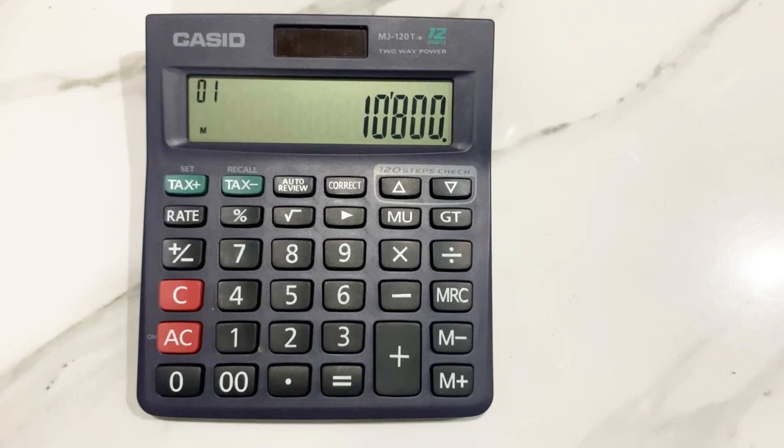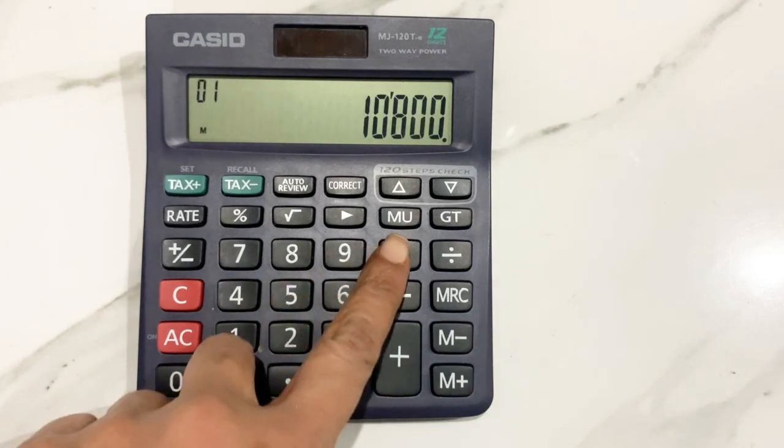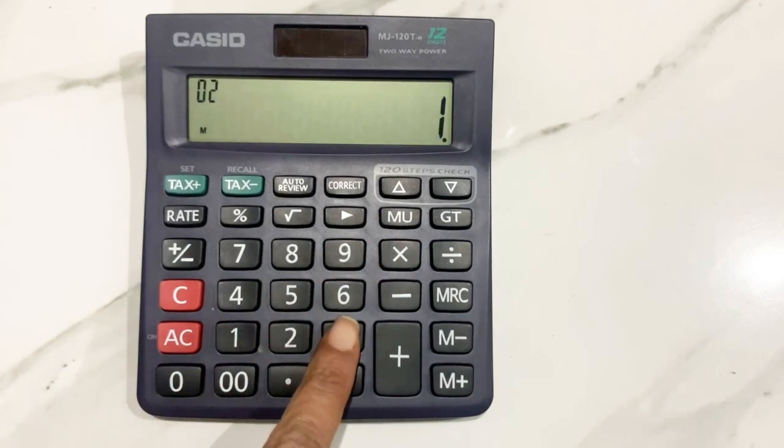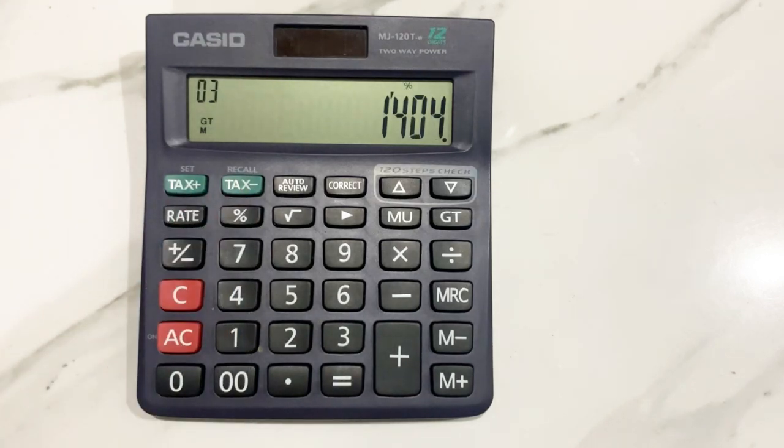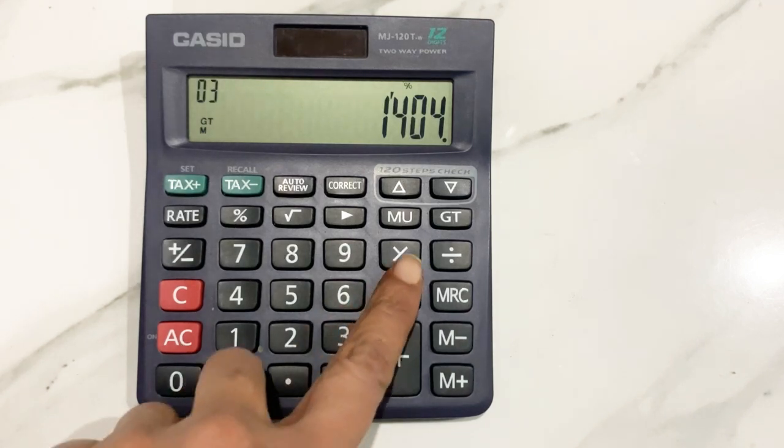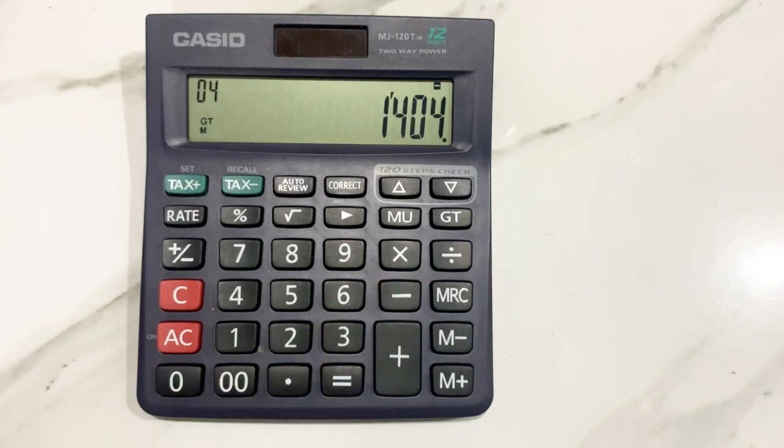In the first step we will multiply it with 13. In the next step we will press the percentage button. Now we will press the minus sign and at the end we will press the equal to sign.